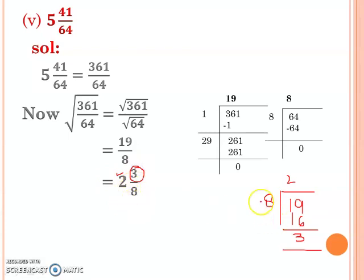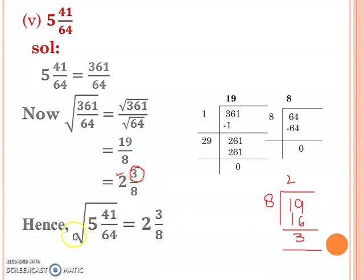Both methods should now be clear to you. The difference between 2.3 and 2.4 is that in 2.3, single numbers were given and you had to find square roots using prime factorization or division method. But in 2.4, numbers are given as fractions. When numbers are given as fractions, simply apply the rule: apply square root separately to numerator and denominator using the given method.